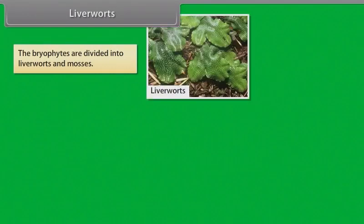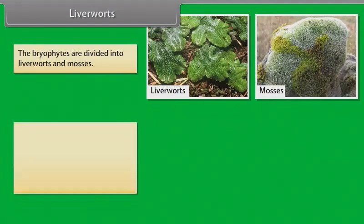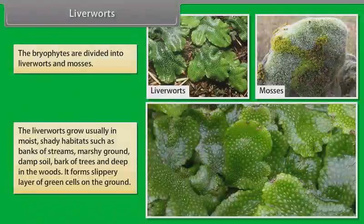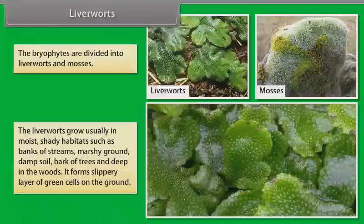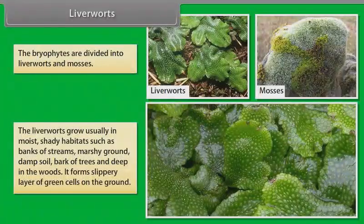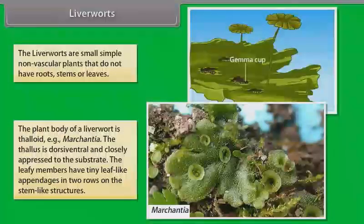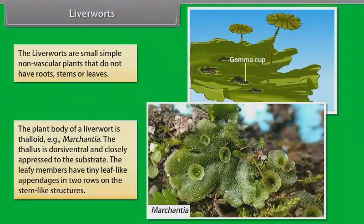Bryophytes are divided into liverworts and mosses. The liverworts grow usually in moist, shady habitats such as banks of streams, marshy ground, damp soil, bark of trees, and deep in the woods. They form a slippery layer of green cells on the ground. Liverworts are small, simple, non-vascular plants that do not have roots, stems, or leaves. The plant body of a liverwort is thalloid — an example is Marchantia.